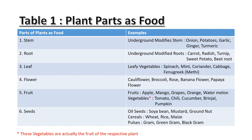The second part is root. Underground modified roots are used to store food in these plants, which we eat. For example, carrot, radish, turnip, sweet potato, and beetroot.